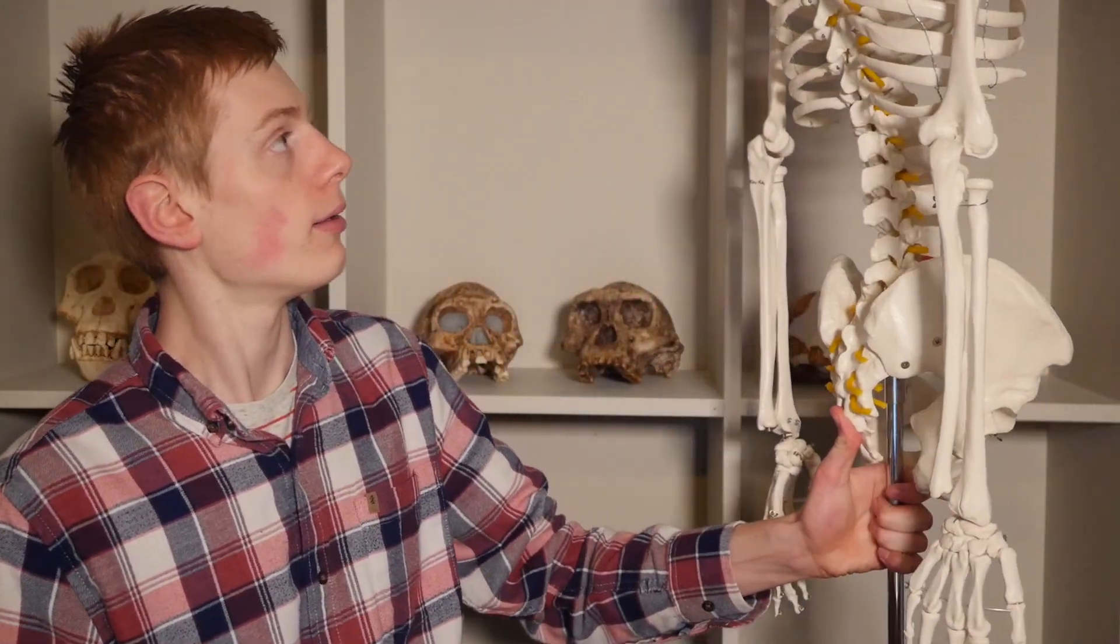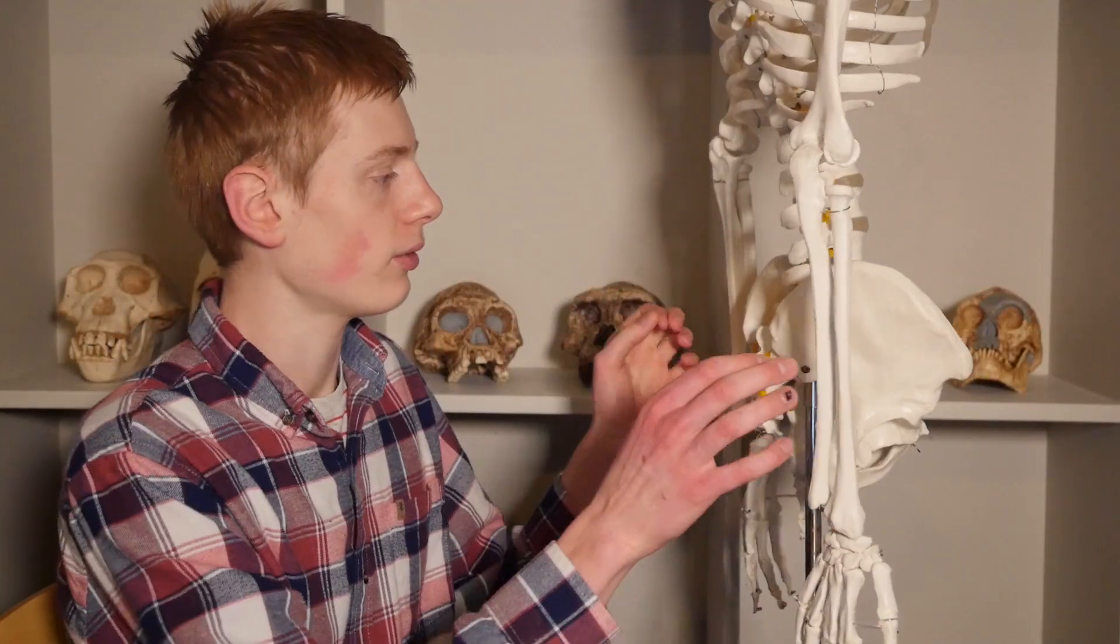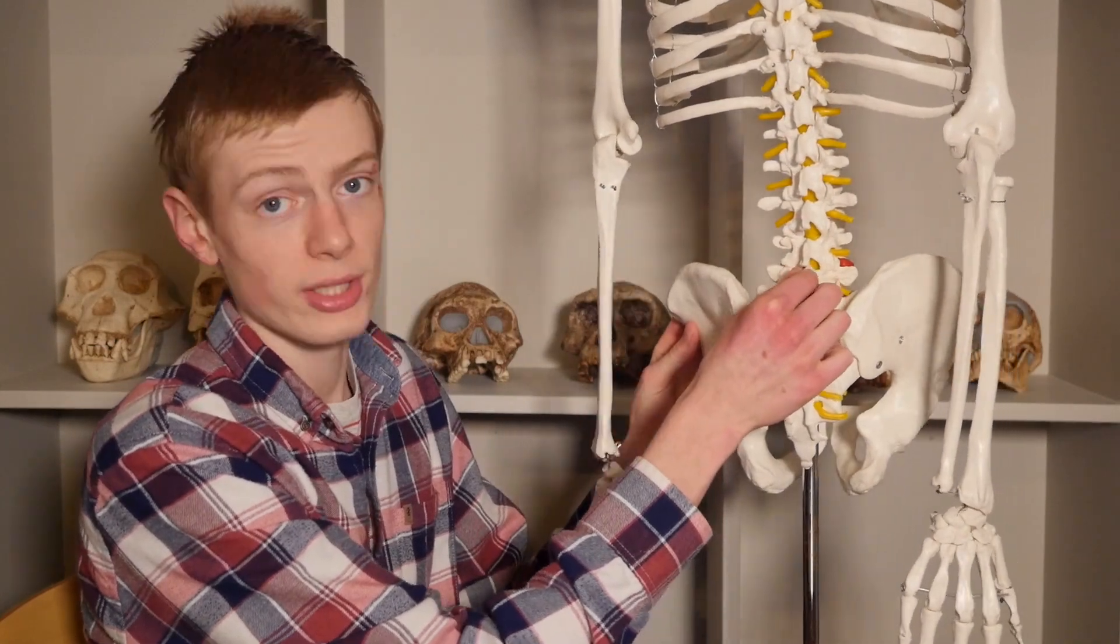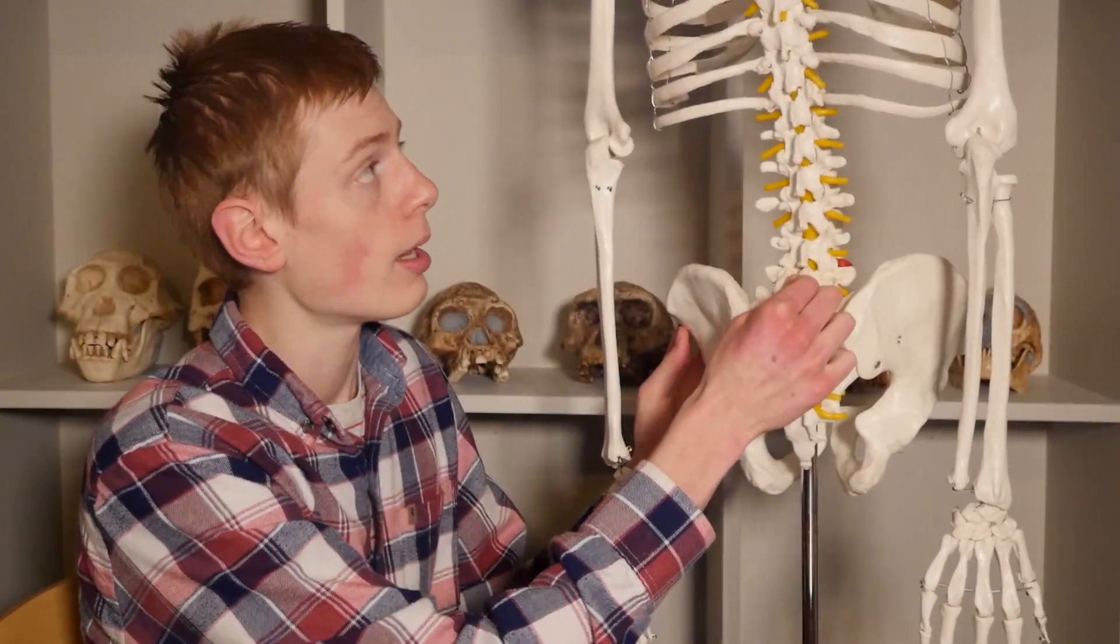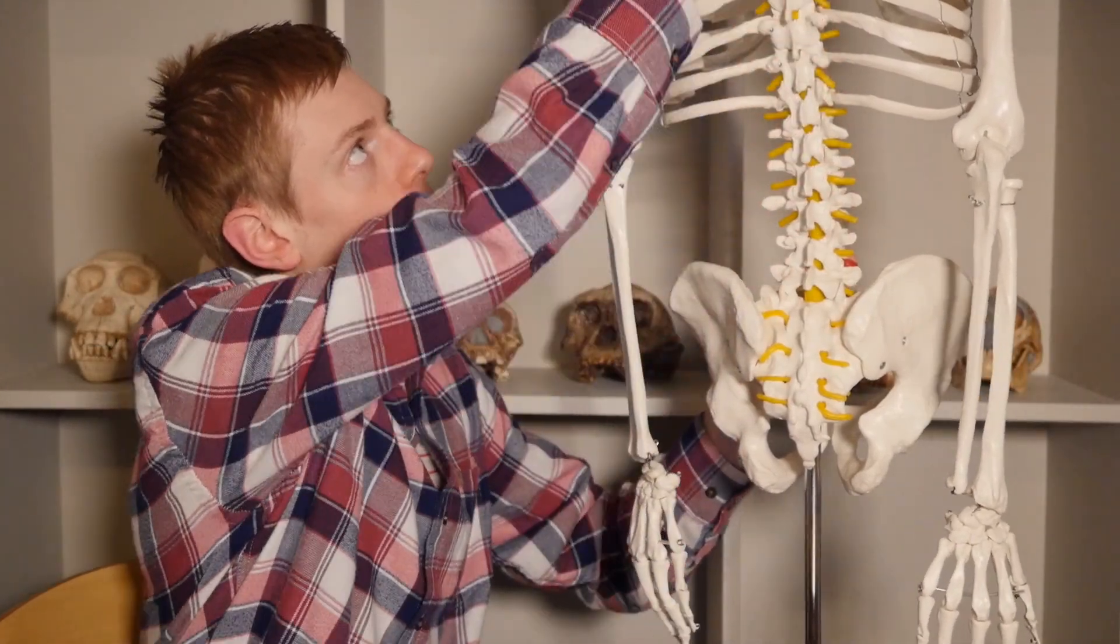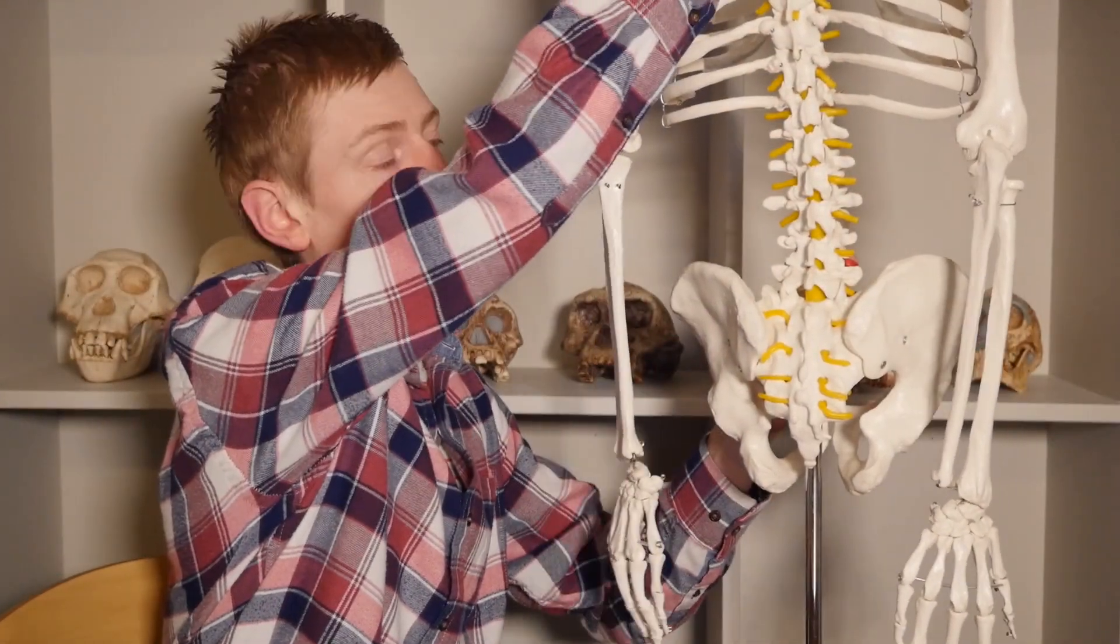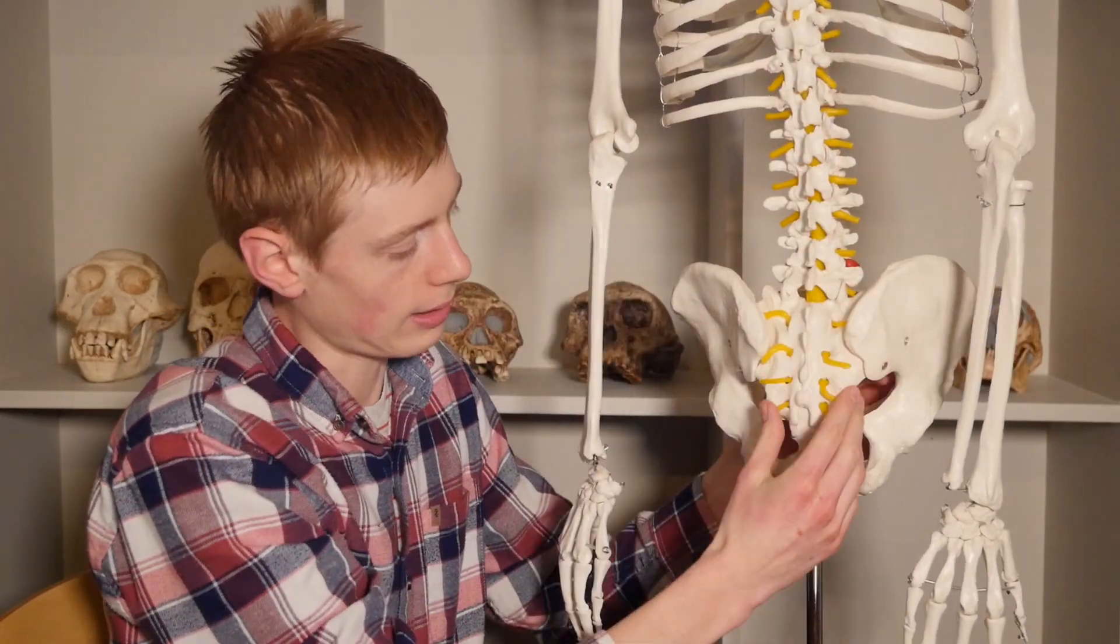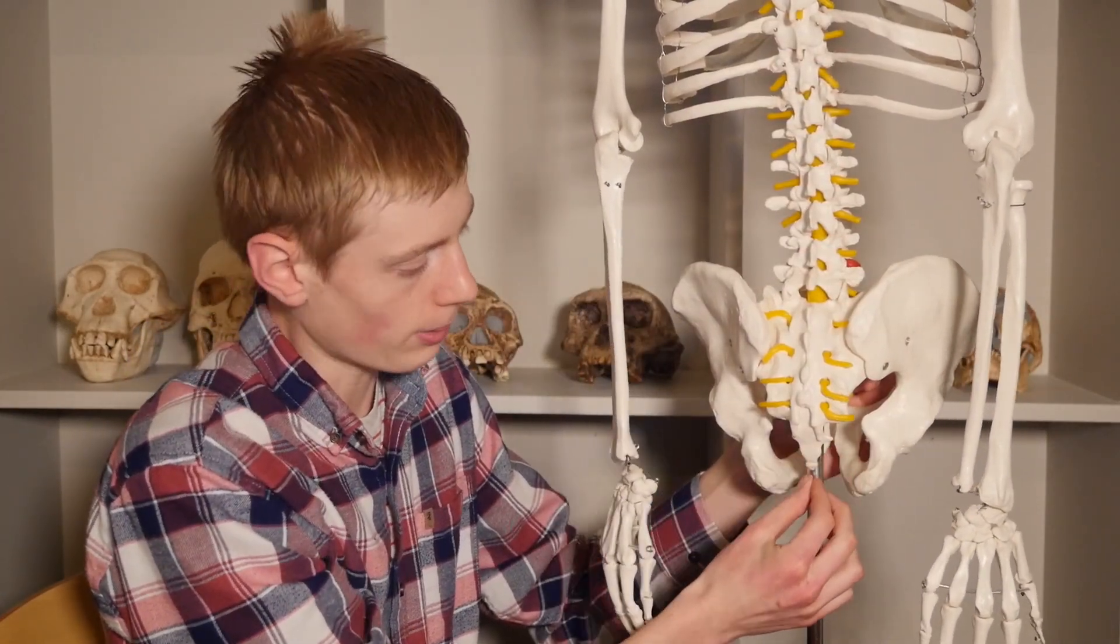Before we get into the paper describing the new fossils, let's take a look at the skeleton of a modern human. This is a modern human skeleton, and we're looking today specifically at these parts right here. These are individual vertebrae. Your backbone is this column running all the way from your skull, way up here, all the way down to your hips, and then down a little further with your tailbone here.